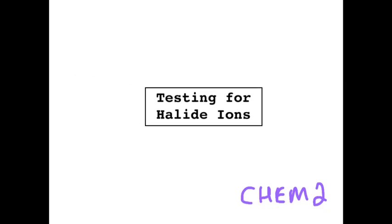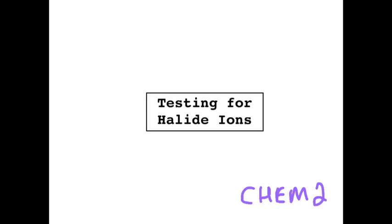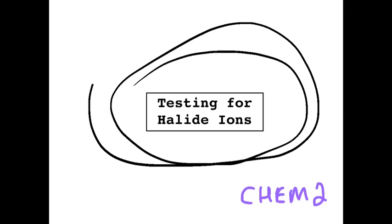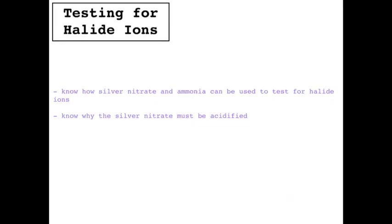This video is on testing the halide ions. Our aims for this video are to know how silver nitrate and ammonia can be used to test for halide ions, and to know why the silver nitrate must be acidified before it's used in this way.